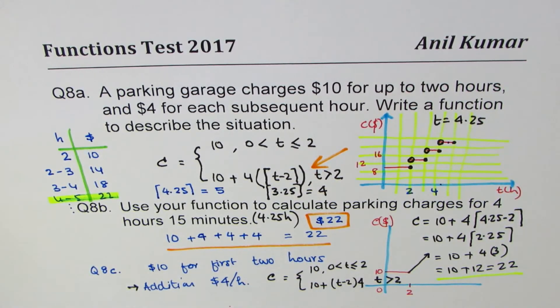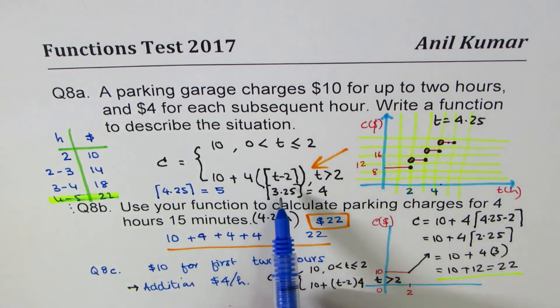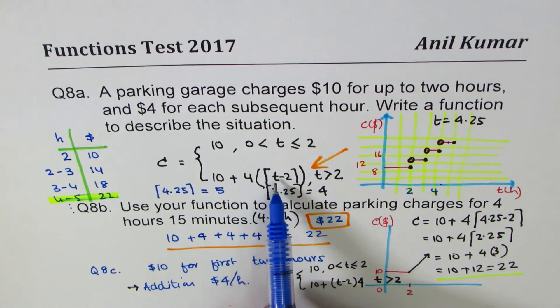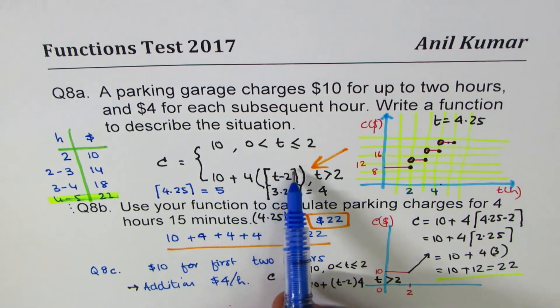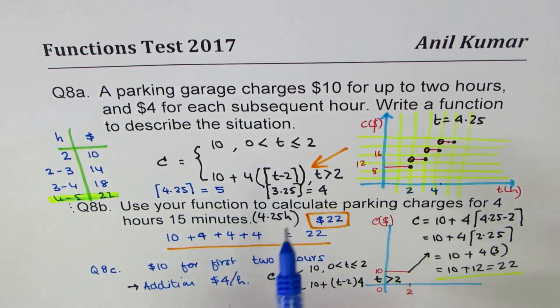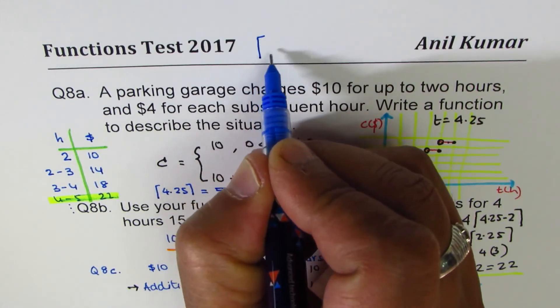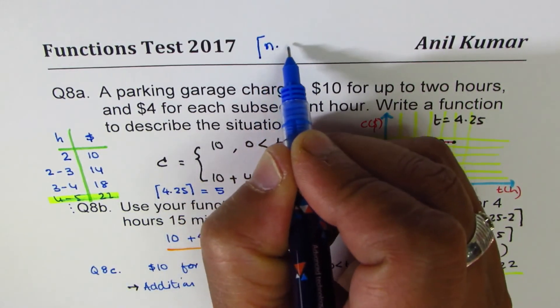So let's go through this question once again. Kind of tricky. A parking garage charges $10 for up to 2 hours and $4 for each subsequent hour. Write a function to describe the situation. So it will be a piecewise function shown here. We have used a ceiling function, which rounds higher integer.